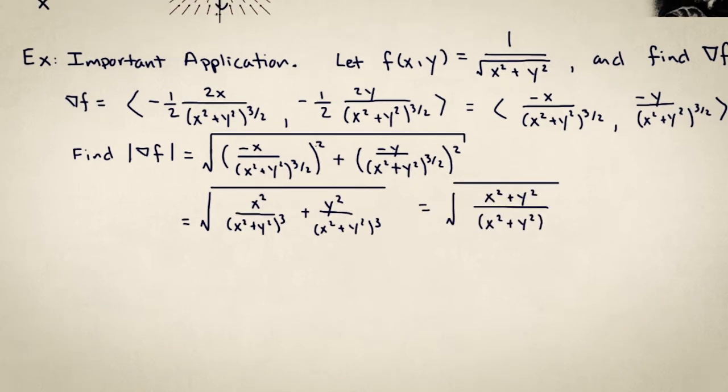So it's already kind of nice because this squared is canceling with that squared in the denominator. And then these two fractions have a common denominator. And now this numerator and denominator are actually the same expression. So this is x squared plus y squared to the power of one.